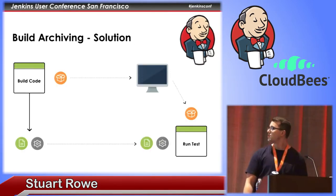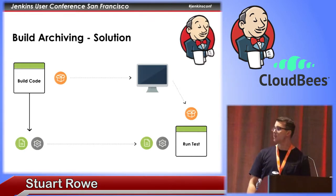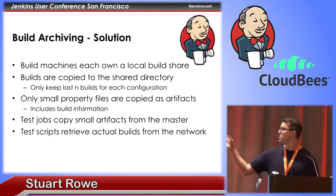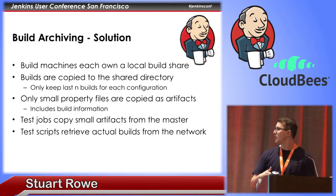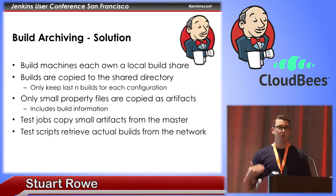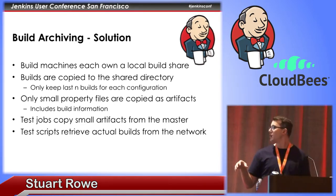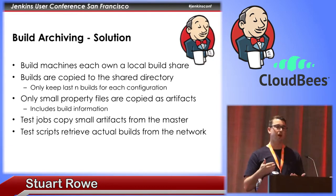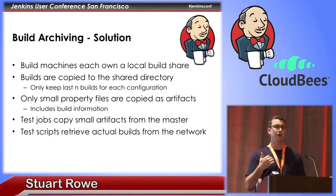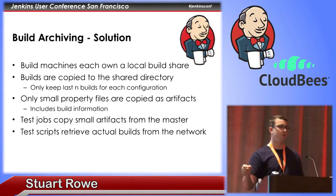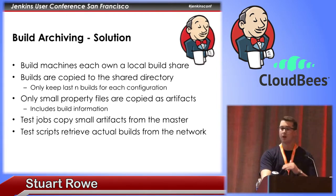The solution we came up with was to have each build machine own its own build archives, and we only copy one small artifact file to the master which facilitates build sharing. Each build machine is configured with its own local build share — a network share that it knows about. As the build project completes, its final step is to copy that build from its workspace to that network share, then generate a property file describing the parameters of the build as well as where it stored that build. Test jobs then copy that small artifact, parse it to find the network share location, and copy the build directly between build machines, avoiding any large hit on the master server.